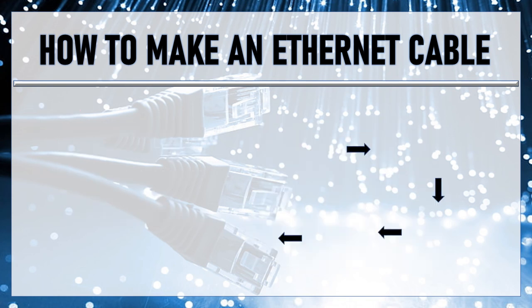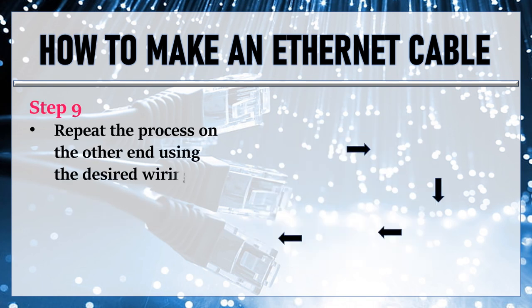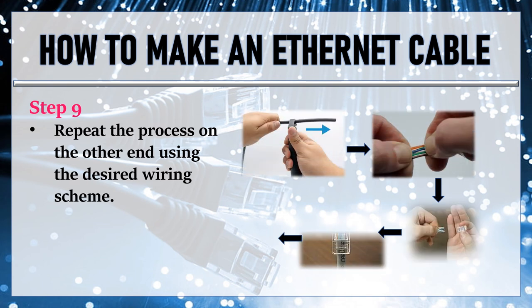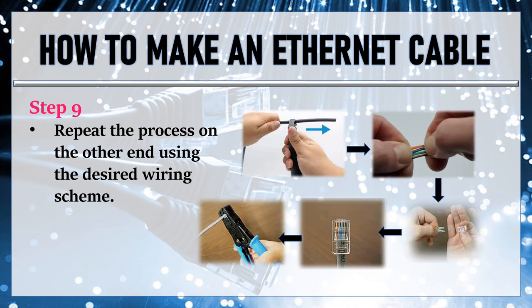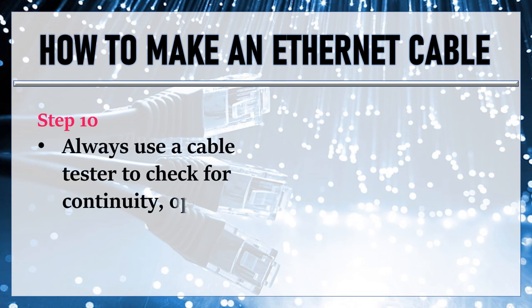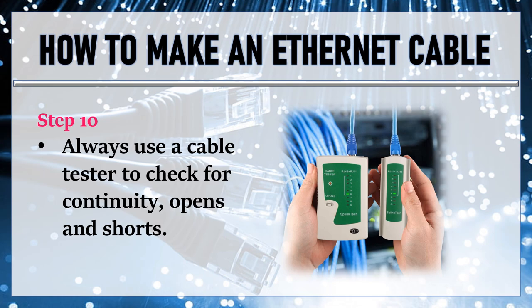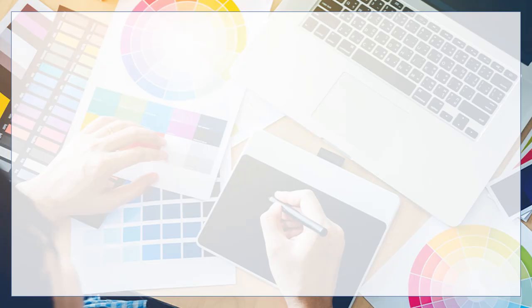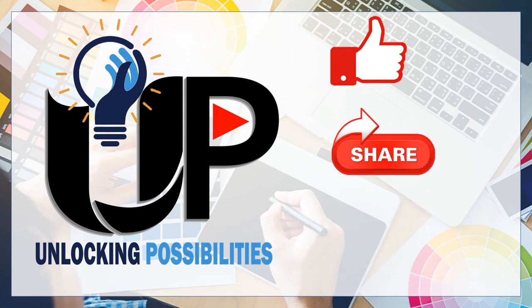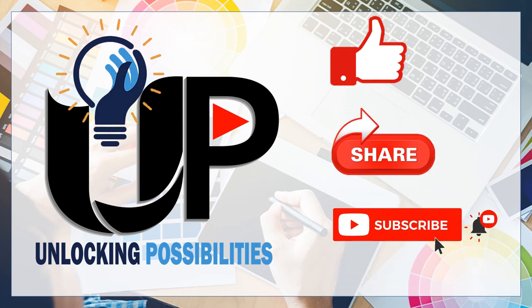Step 9: Repeat the process on the other end using the desired wiring scheme. Last and final step: always use a cable tester to check for continuity, opens, and shorts. That's it — hope you have learned something from my video. Don't forget to hit the subscribe button, like and leave a positive comment, and share my channel, Unlocking Possibilities. Thank you and God bless.